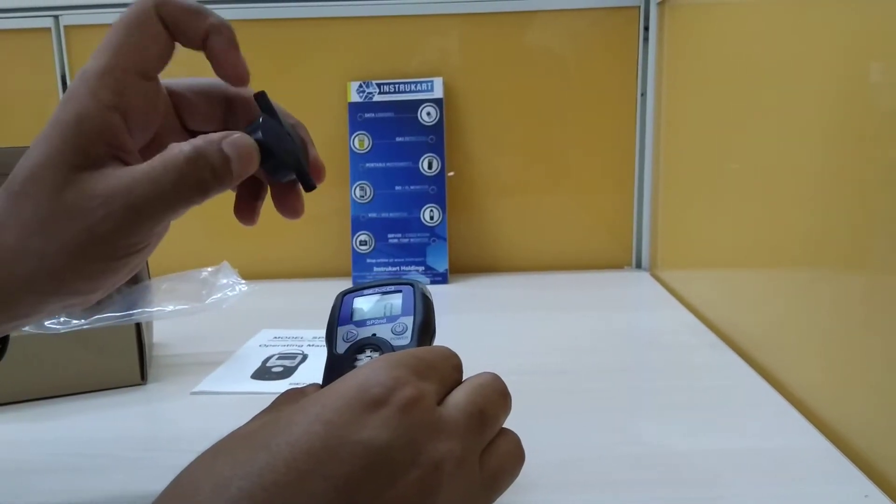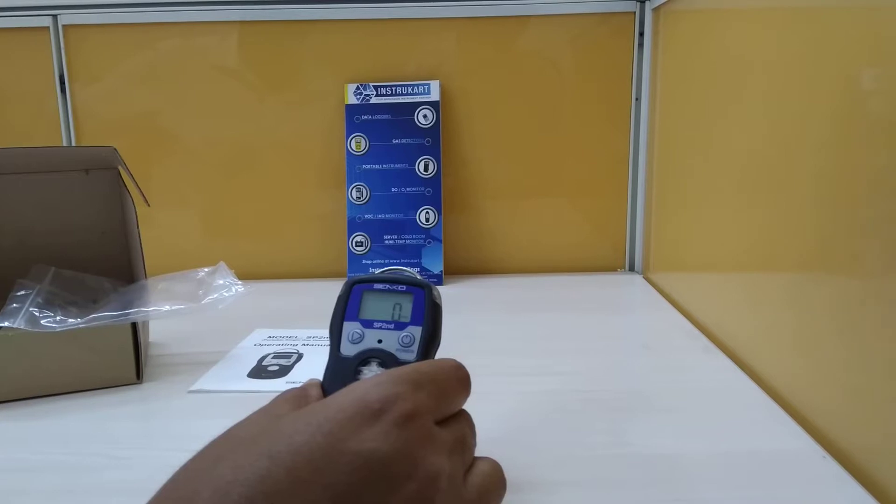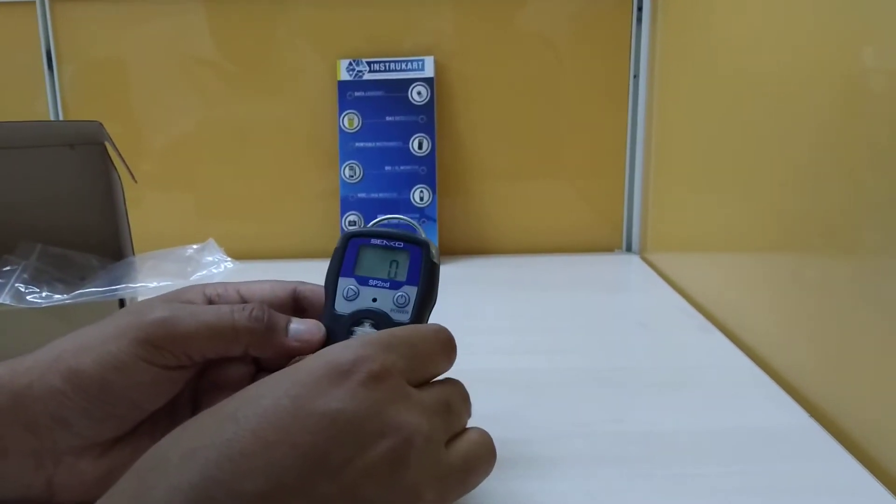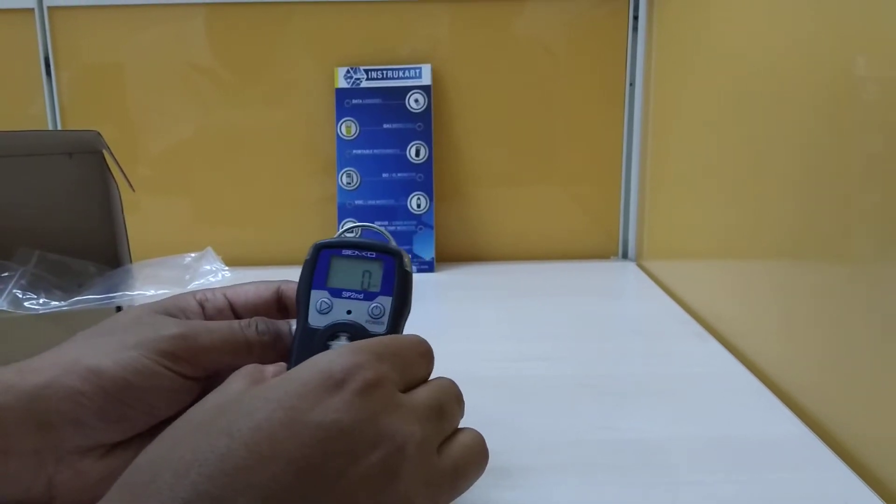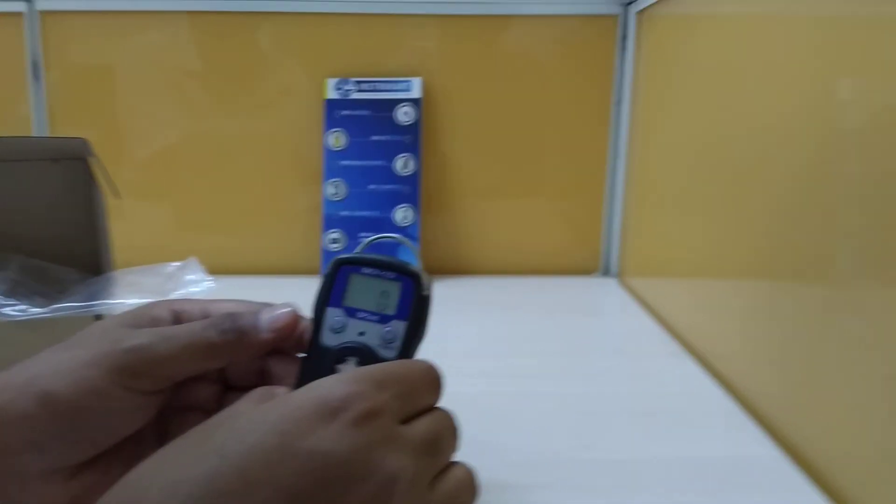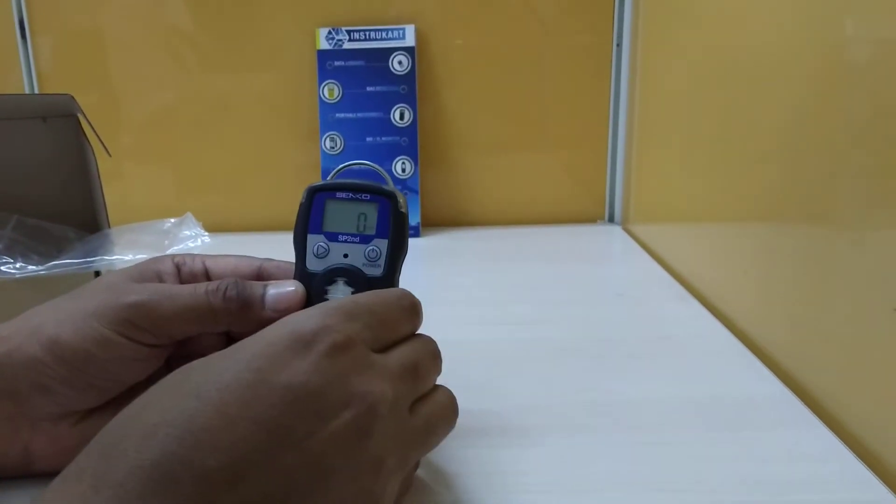Operating humidity is 5 to 95 percent RH. It has an approval of 2C, which indicates what kind of zones we are using the instrument in.